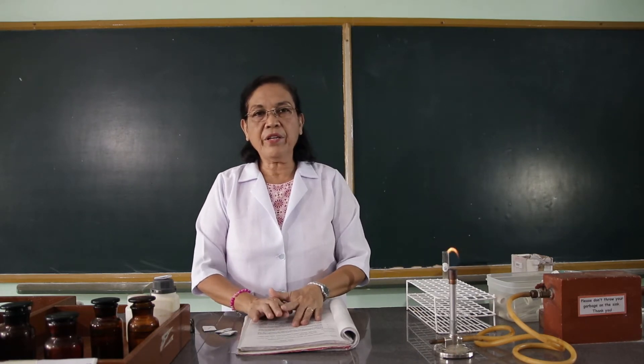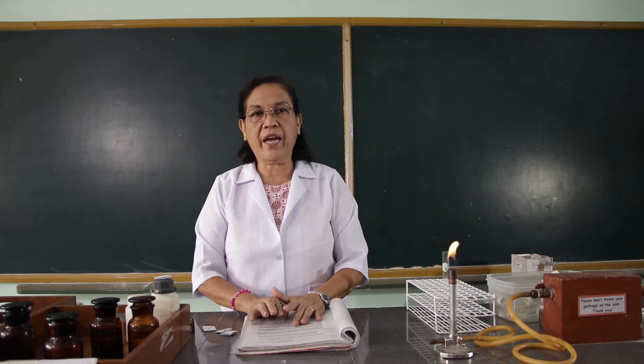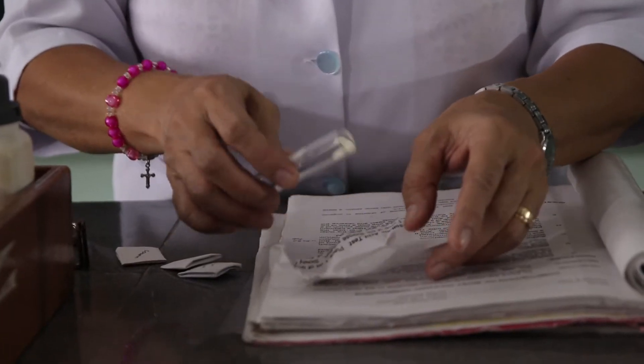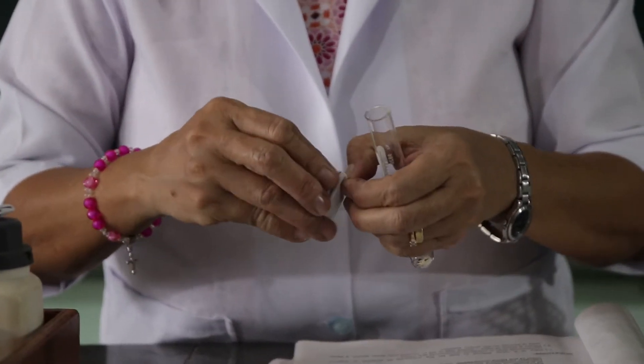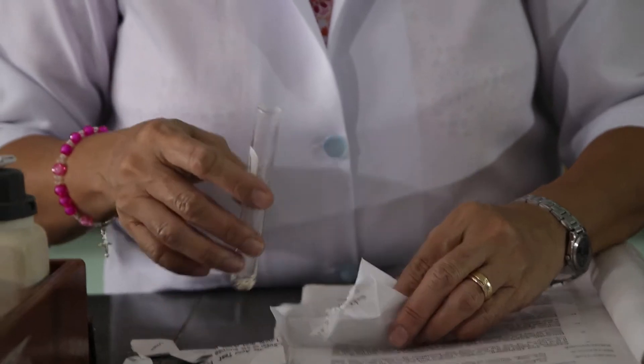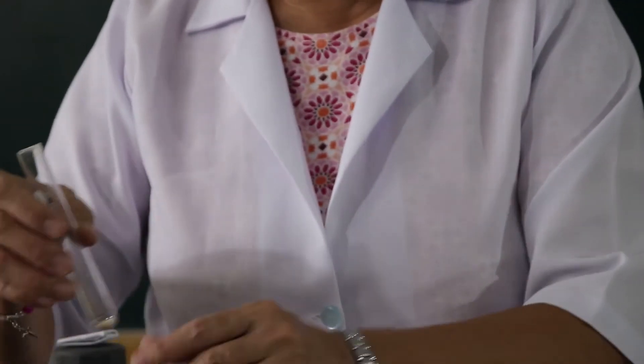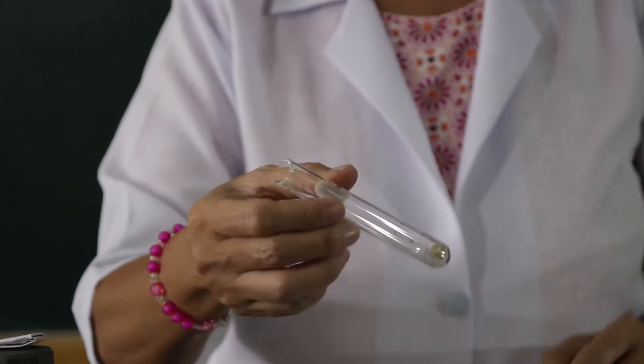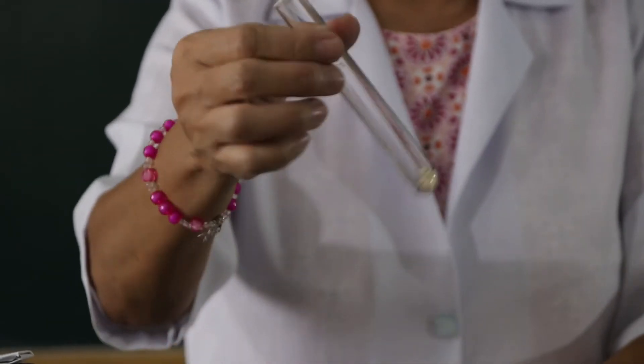So for that first procedure, that is to test for the presence of carbon and hydrogen. The next part of the activity is we are going to heat a mixture of the egg albumin and soda lime. So this is the egg albumin, and we are going to mix this with soda lime. Let's mix the two — the egg albumin and the soda lime.